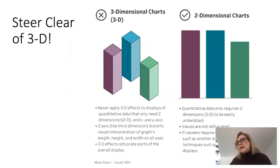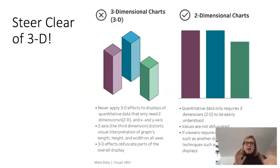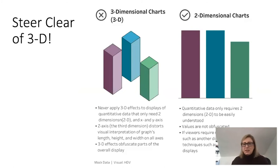Steer clear of 3D. Studies show people use 3D either because they think their data is unreliable and hope 3D will obscure that, or simply because they think it looks cool. In actual fact, just steer clear — 3D is hard to see, hard to compare, and unnecessary. Just show 2D. That's all you need.